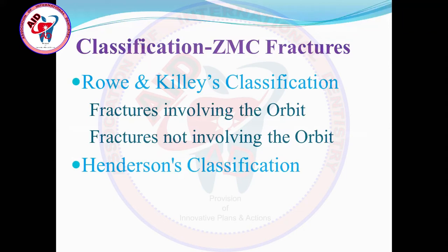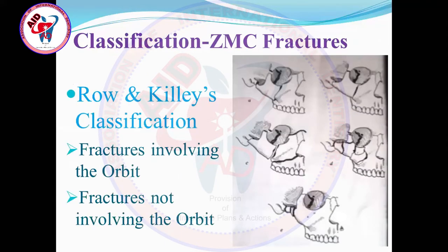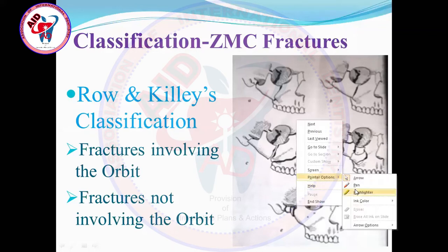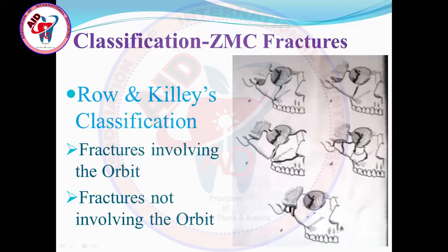The second useful classification is Henderson's classification. Looking at the diagrammatic representation of different zygomaticomaxillary complex fracture types according to Rowe and Killey: type A is minimally displaced, type B is inward-downward displacement, and type C is outward displacement. The zygomatic arch, as seen here, does not contribute to the constitution of the orbit. The B-type V-type fracture of the zygomatic arch is also visible in the radiographic representation.